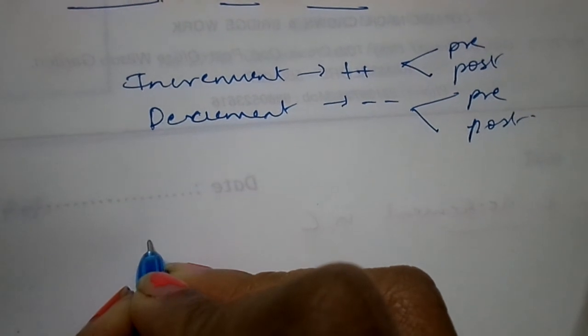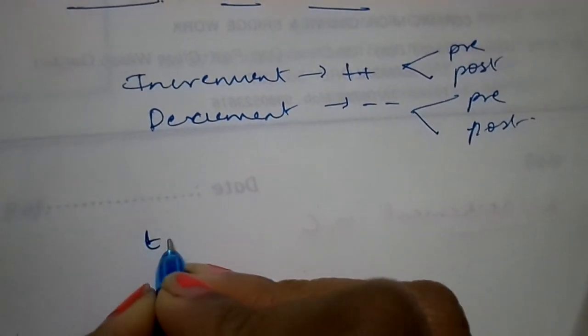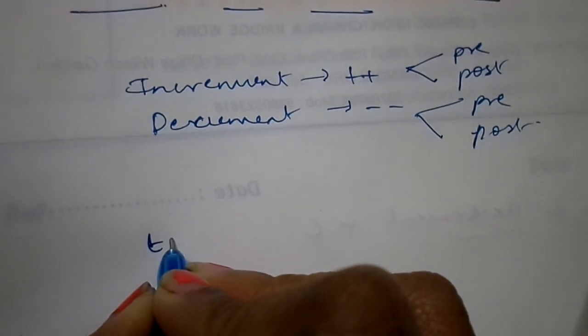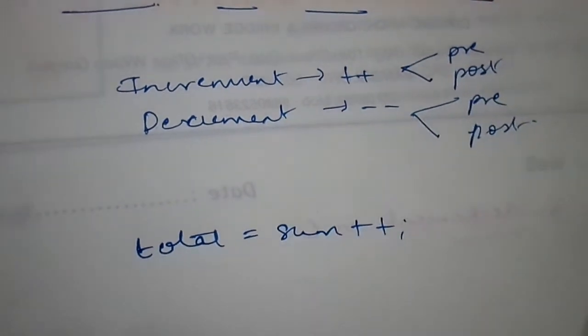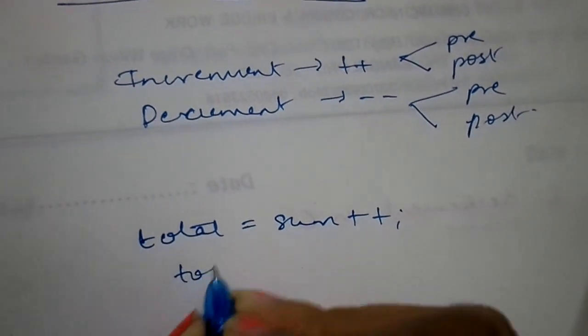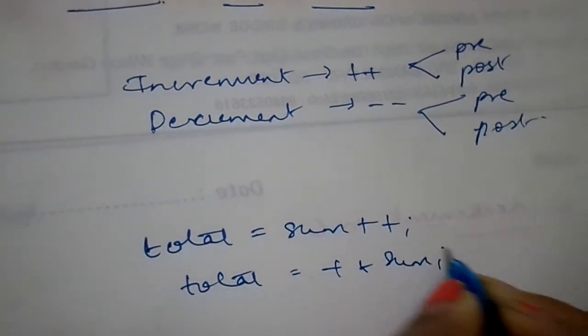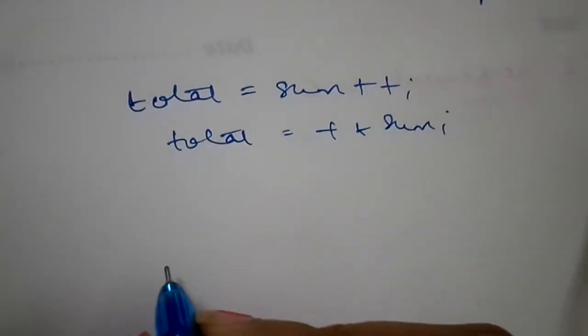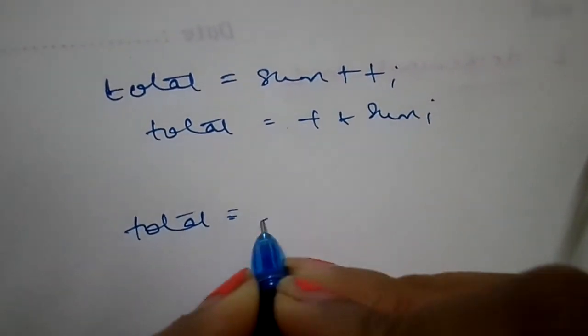Let me give you an example of what I mean by pre increment and post increment. Suppose I have a problem: total = sum++ and total = ++sum.